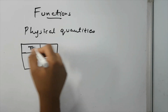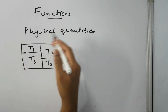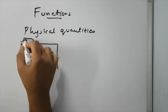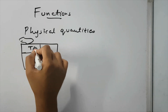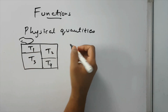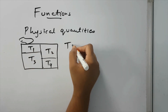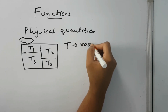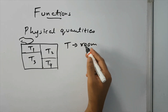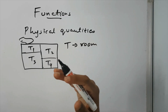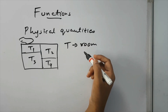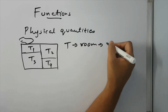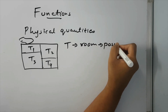They could be the same, but if you think that this house is shaded, this room would be cooler. So temperature depends on what? The room. Now, if I represent room as a physical quantity, I would say temperature depends on position.